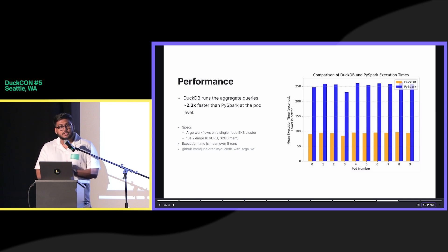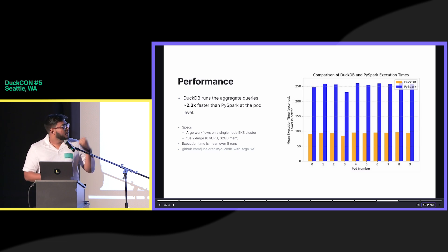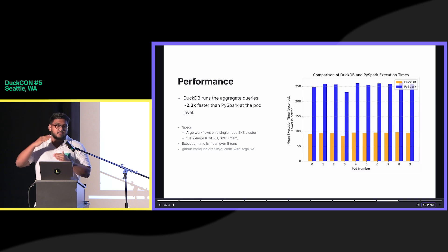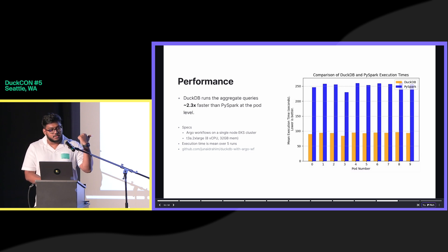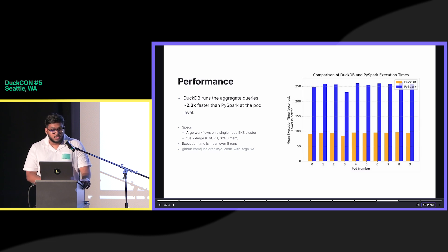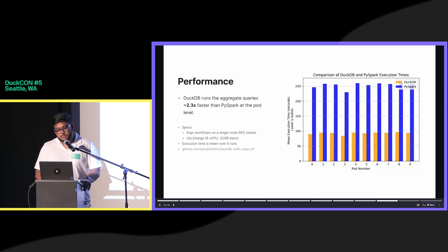We compared DuckDB to PySpark because that is what we used before we implemented DuckDB in this setup. DuckDB usually runs around twice as fast as PySpark. The main reason for this is all the overhead that PySpark requires when you try to initialize it in memory in isolation. This benchmark ran on a T3A2xlarge single-node EKS cluster on which we were running Argo Workflows, and the execution time is a mean over five runs.